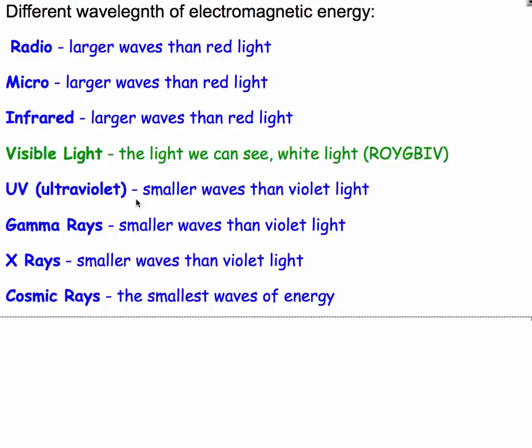And then getting smaller than we can see, smaller than violet, would be ultraviolet, gamma, x-rays, and cosmic waves. They zoom right through you, you don't even know it.